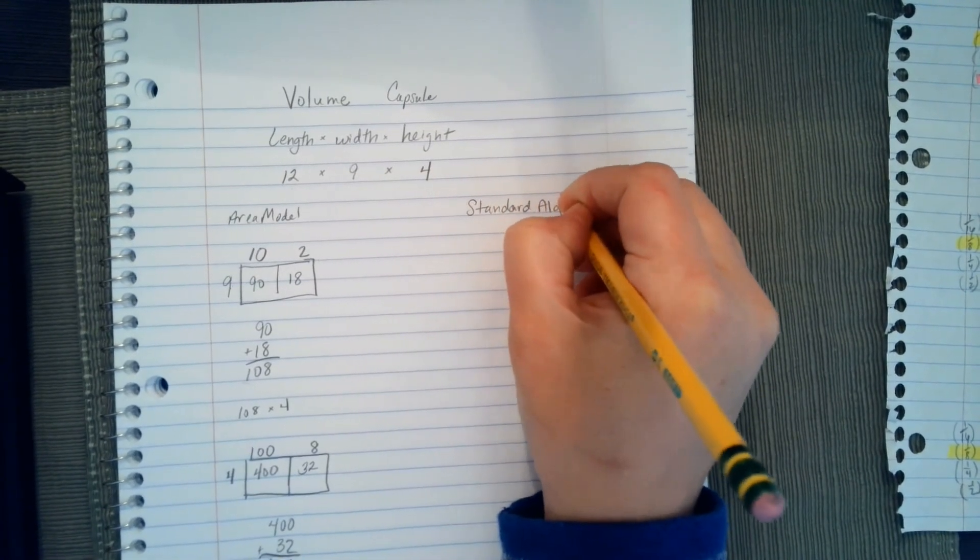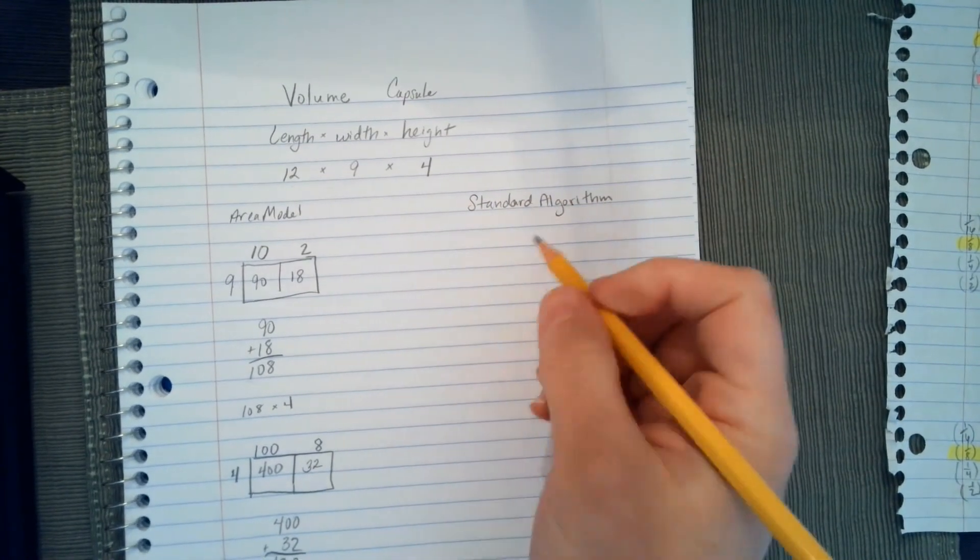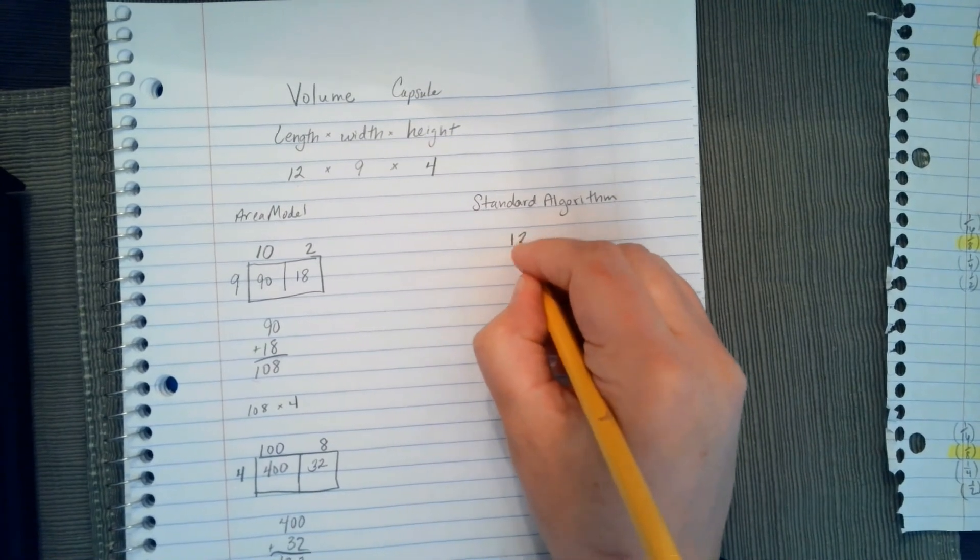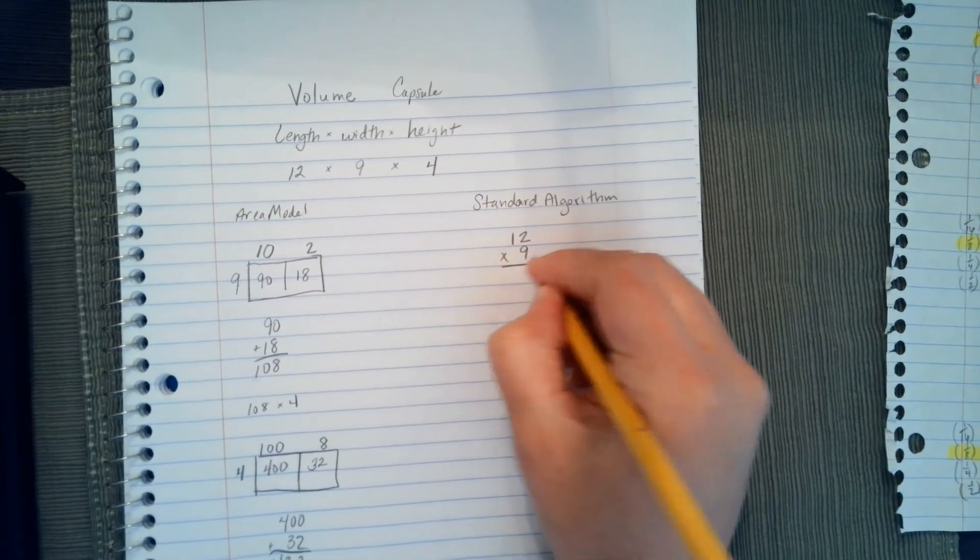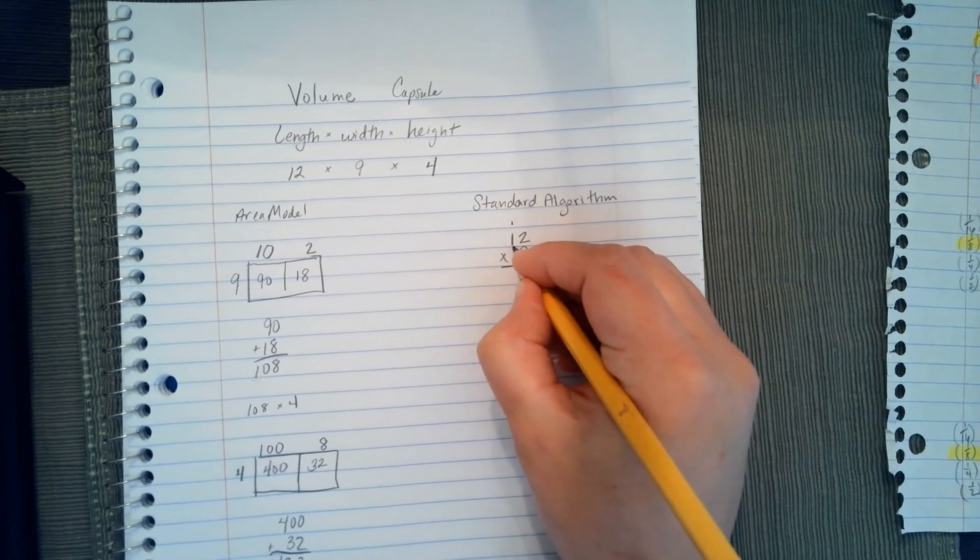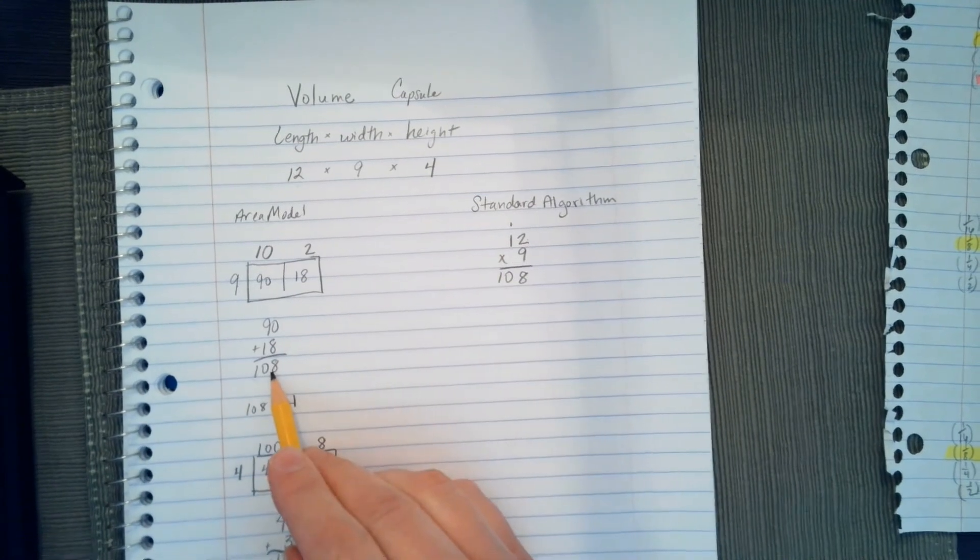And this is where most of your parents will probably choose to do this method or show you this method, but we have practiced it. So again, we're going to start with 12 times 9. 9 times 2 is 18, carry the 1. 9 times 1 is 9, plus 1 is 108. They both match.